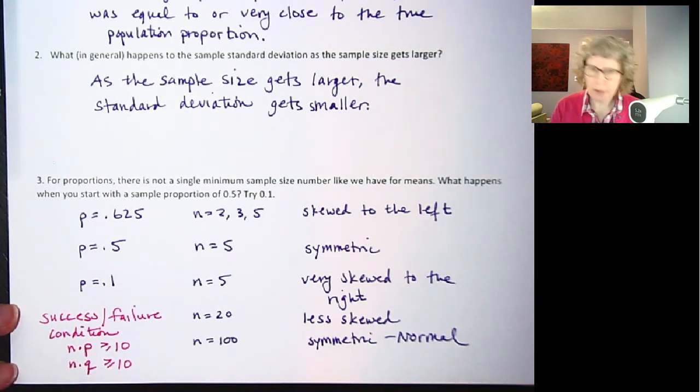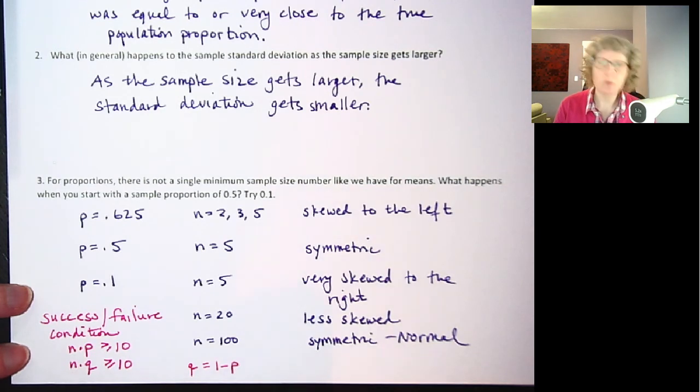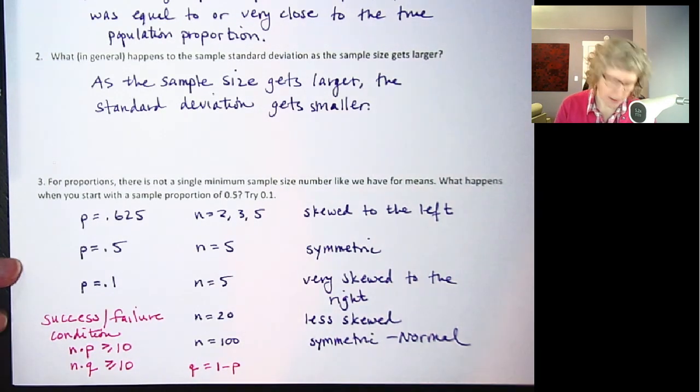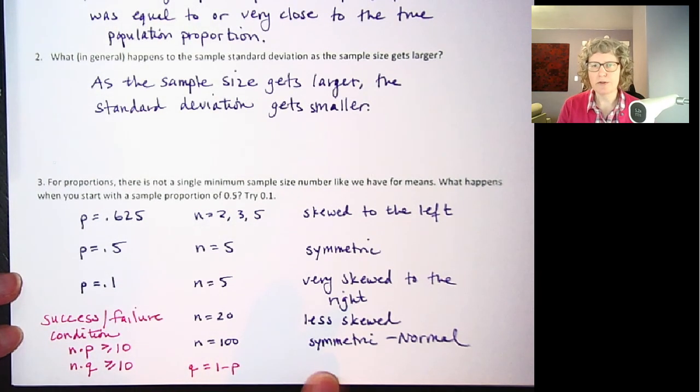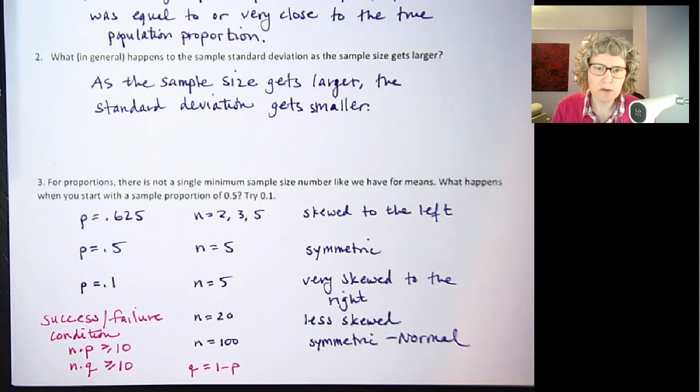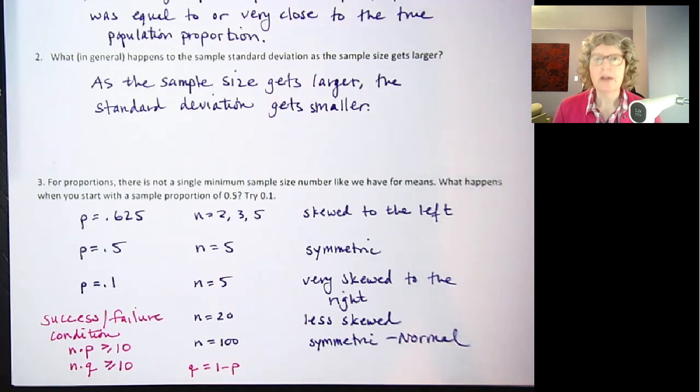Remember q is the complement of p. So q equals 1 minus p. If one's 60, the other's 40. If one's 30, the other's 70. They both have to be greater than or equal to 10. So that covers if you're skewed to the right and also skewed to the left. So what we do is we test that. And if those are both true, then our sample size condition is met. In this case, it's called success failure condition.